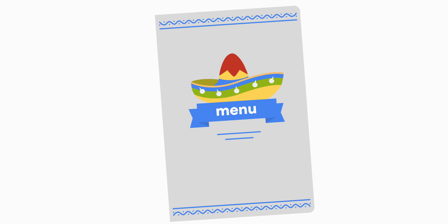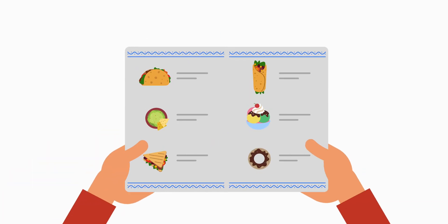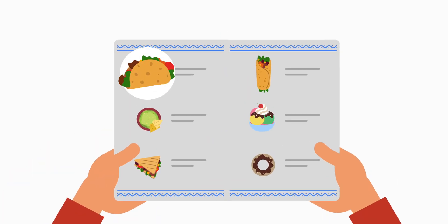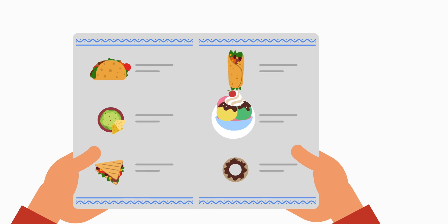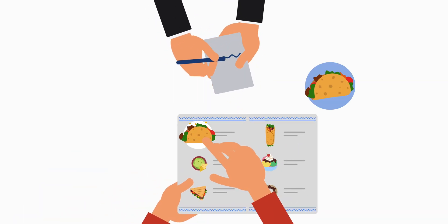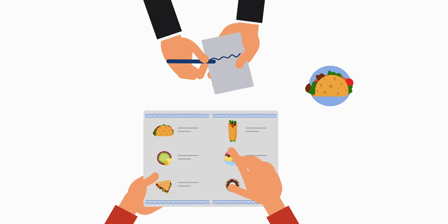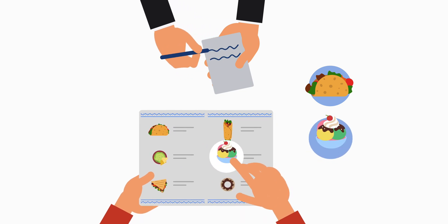Imagine going to your favorite restaurant. You take a look at the menu and you know exactly what you want to order. And wow, you realize they now have ice cream for dessert. So you place your order and let the waiter know you'll be having that ice cream after your meal.